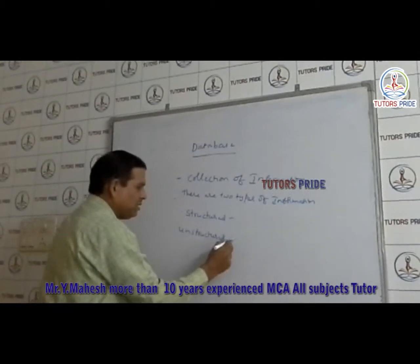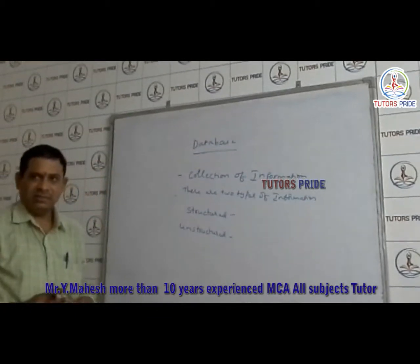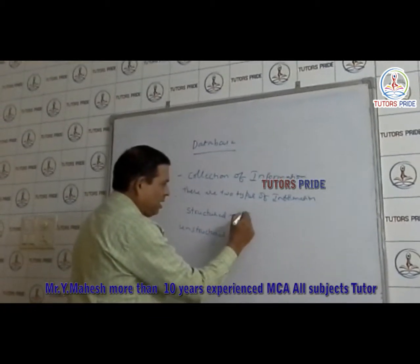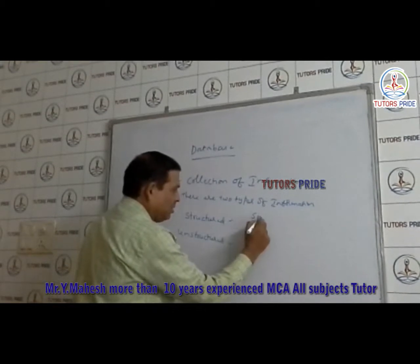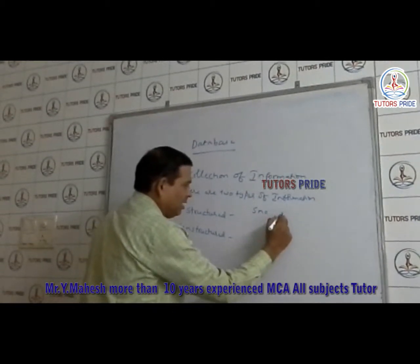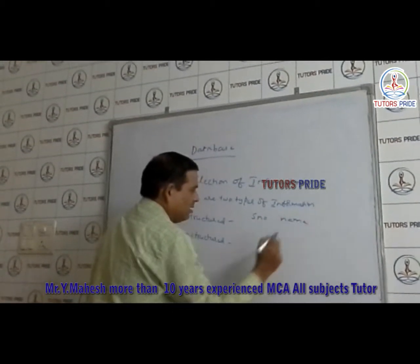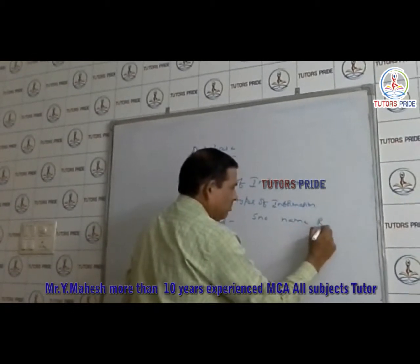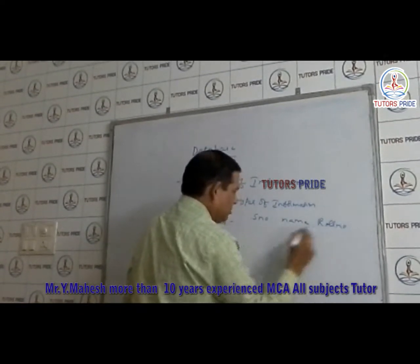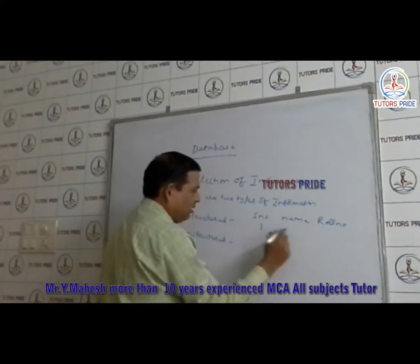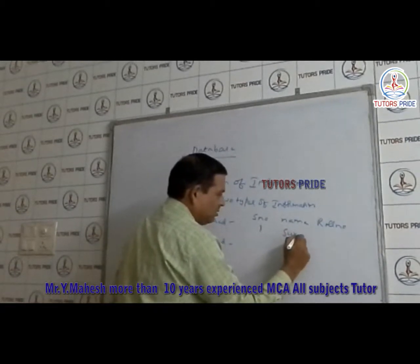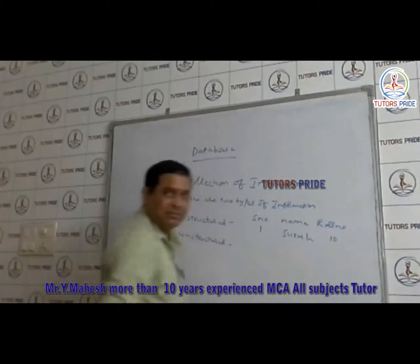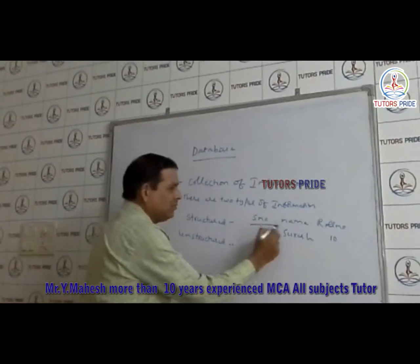So what is meant by structured and what is meant by unstructured? Suppose if I am having some fields like serial number, name, and roll number — this is a structured one.